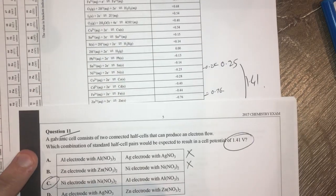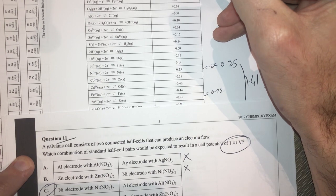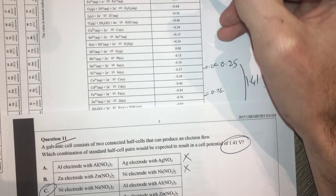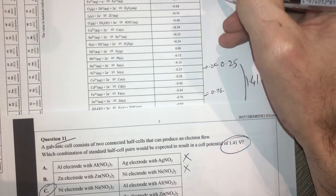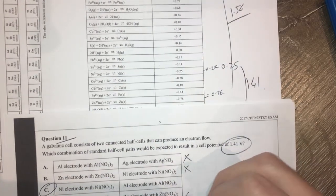Let's just double check. Silver is up here at 0.8 and zinc was down here. The difference between these two is 1.56, so it's not going to be that one. So therefore, it's definitely going to be our answer of C.